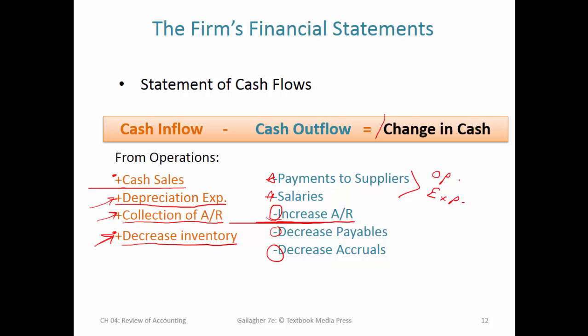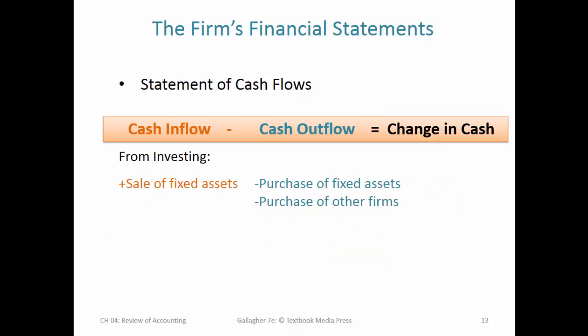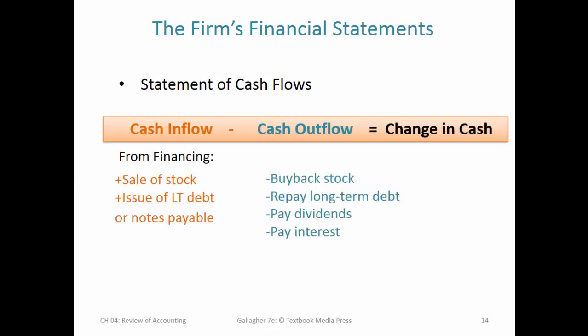Once we make all those adjustments, we get to the net actual change in cash. Financial analysts care about this because credit analysts want to see if the firm is generating enough cash to pay its interest obligations. There are also other categories of adjustments: investing operations — anytime we sell fixed assets, that's a separate category of income added into cash flow. When we purchase other assets or firms, that typically uses cash and goes against cash flows.